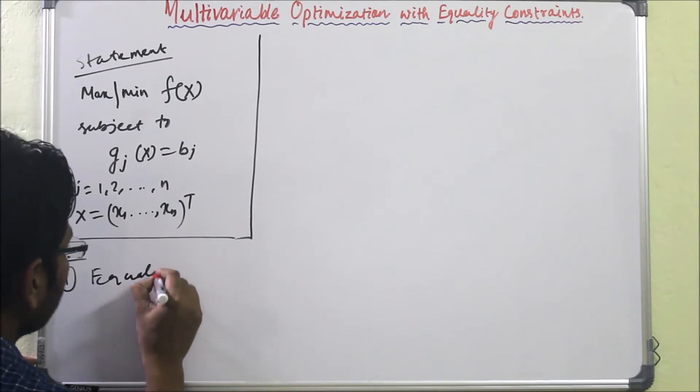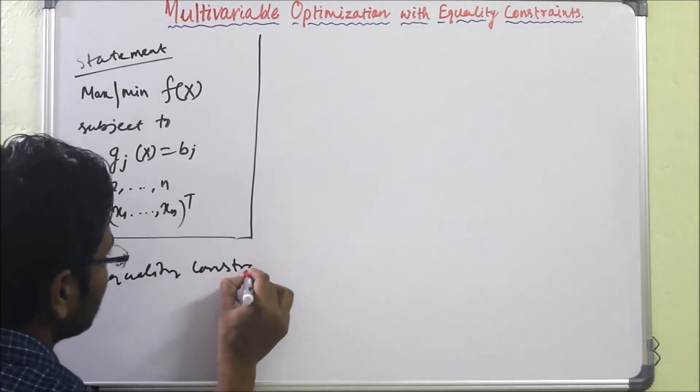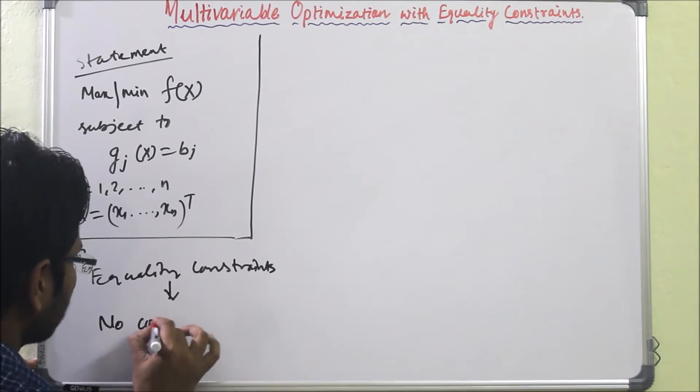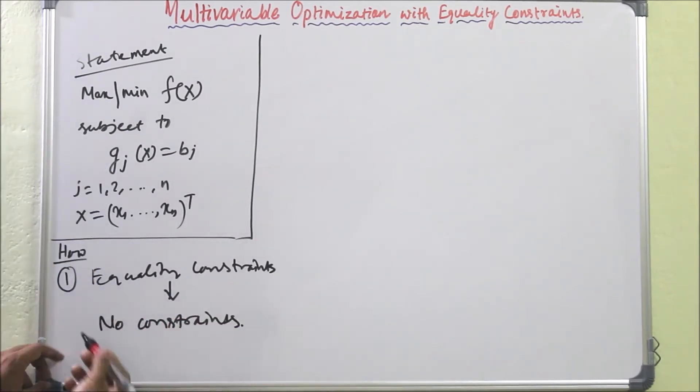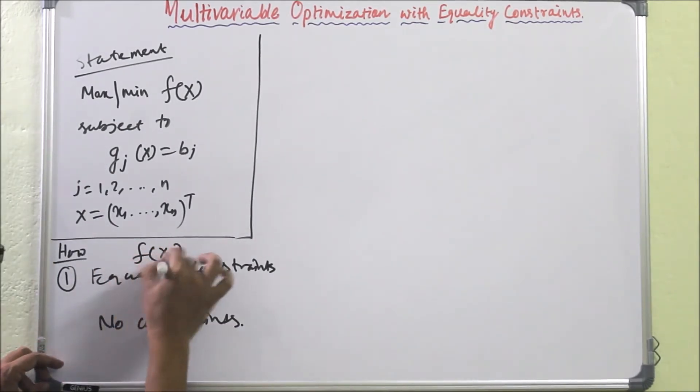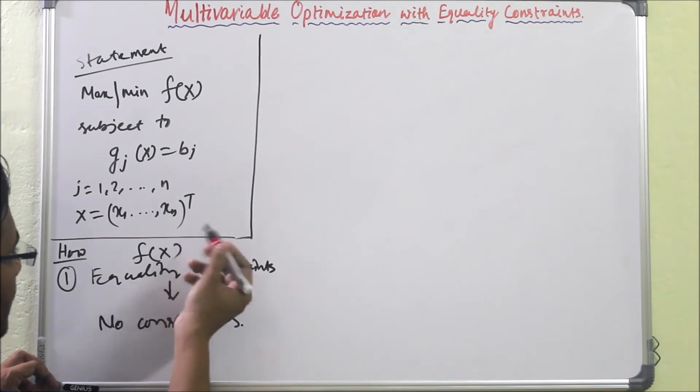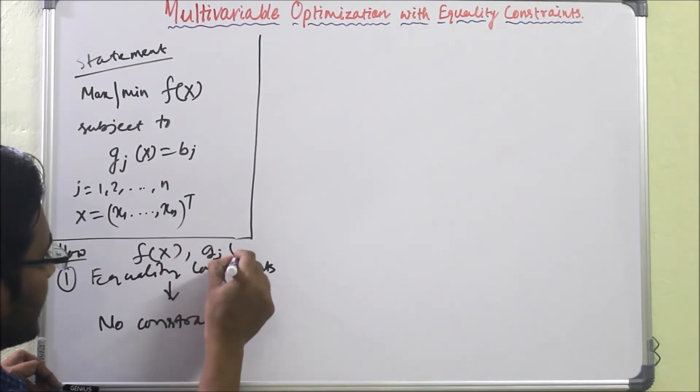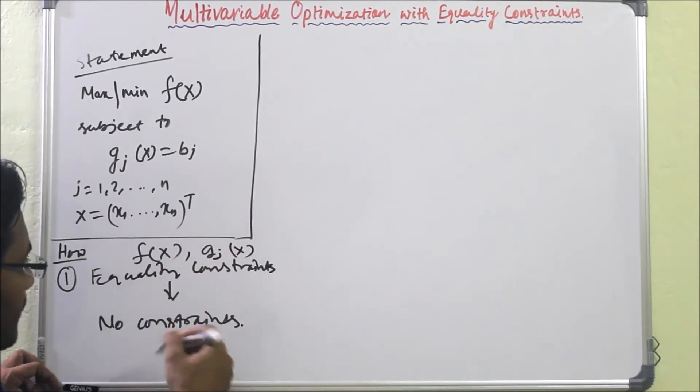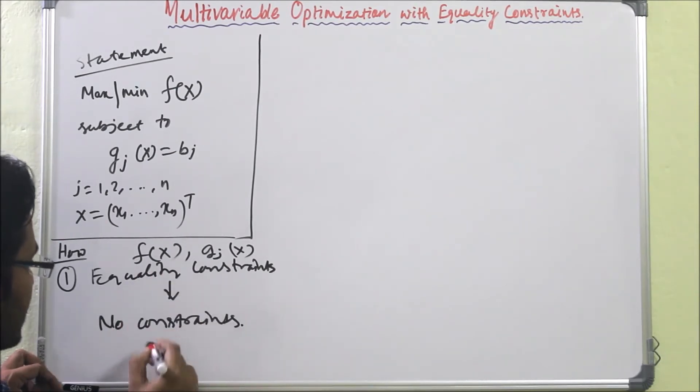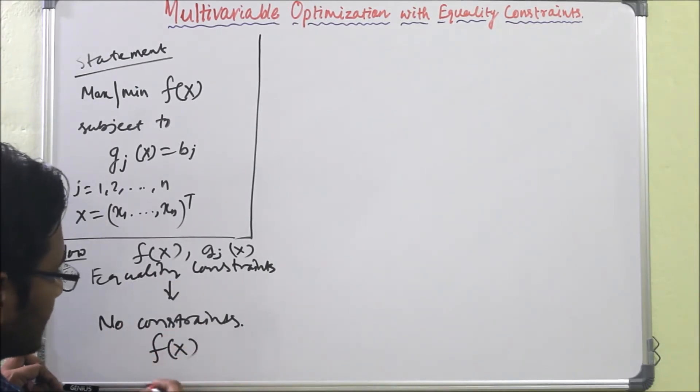In this problem we have given f(x) and g_j(x). Now by some means if we convert this problem to f(x) only, then we know how to do it by classical method.